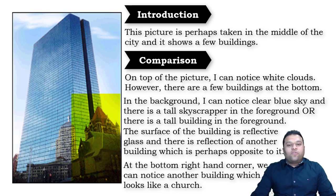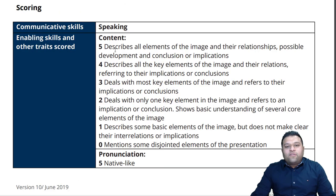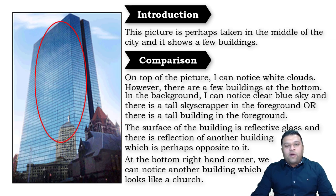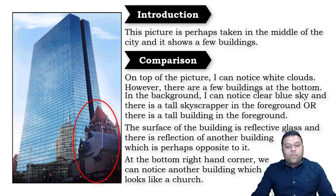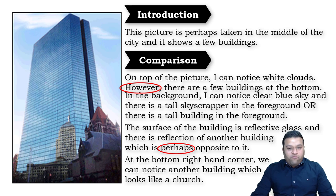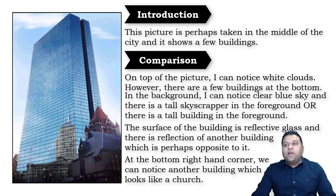There is a reflection of another building which is perhaps opposite to it. In the bottom-right corner we can notice another old building which looks like a church. I'm saying 'which looks like' — it's not necessarily a church, that's an implication. What I've done is described all the elements: clouds, buildings, background sky, tall skyscraper, reflective glass, reflection, and the old building. Using 'however' shows contrast and relationship. 'Perhaps' and 'which looks like' provide implications — this structure helps you score high.